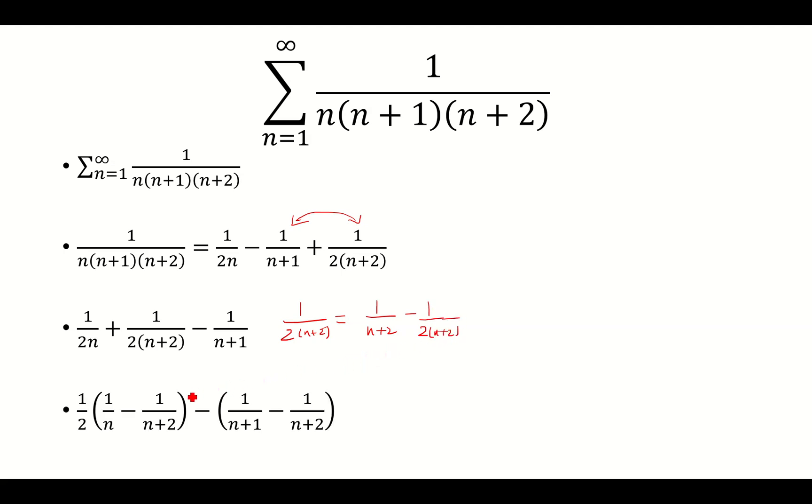And so here, this part right here is this over here. And then here we have the minus negative 1 over n plus 2 is this one.